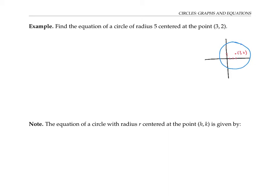For any point x, y on the circle, we know that the distance of that point x, y from the center of the circle is equal to the radius five. From the distance formula, we know that that distance of five is equal to the square root of the difference in the x coordinates, that's x minus three squared, plus the difference in the y coordinates, y minus two squared.